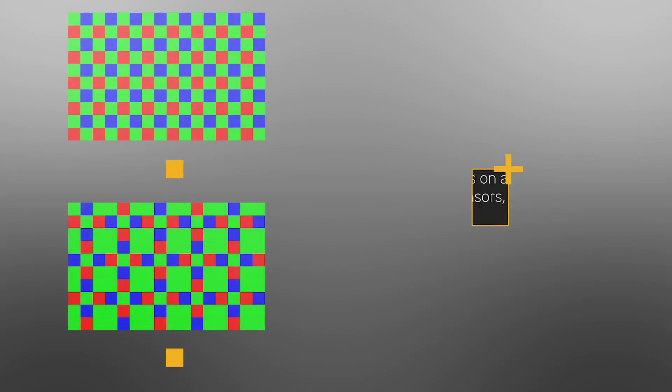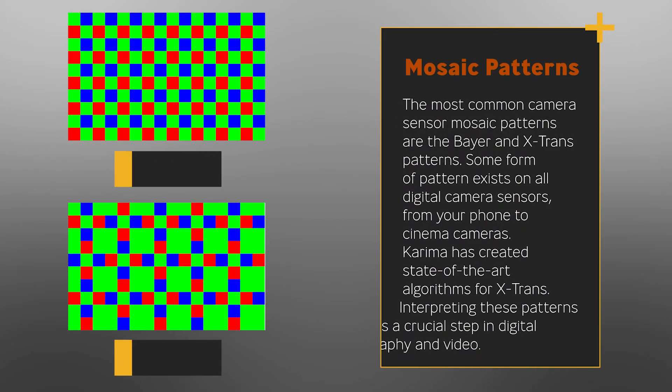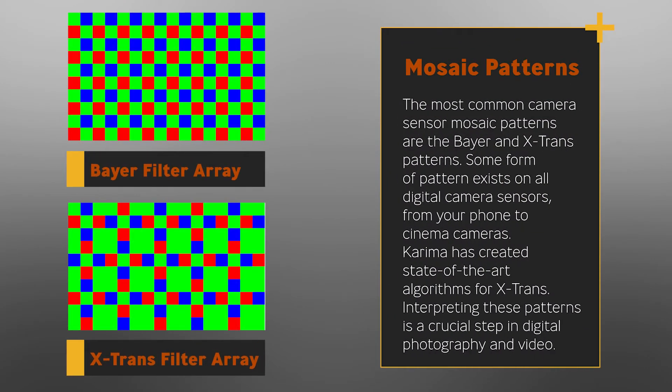But because you're capturing all the light information on a 2D plane — the camera sensor — you can only capture either red or green or blue at any given location. And so this camera sensor has what we call a mosaic pattern, where it's a repeating pattern of either red, green, or blue pixels.